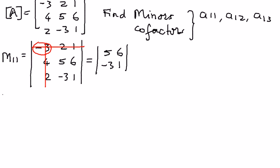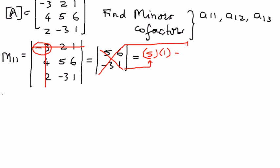We want to find the determinant of that. We're going to multiply the major diagonal elements, which is going to be 5 times 1, minus the minor diagonal elements, and that is going to be negative 3 times 6. Therefore, when we simplify this, this is going to be equal to 5, and negative 3 times negative 3 is positive 3, times 6 is 18. So 5 plus 18 is going to be equal to 23.